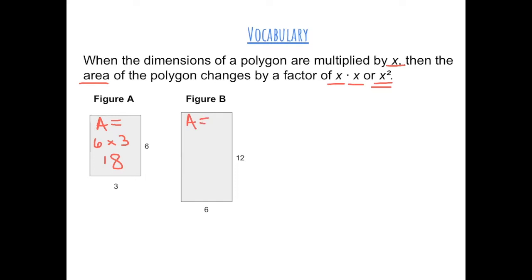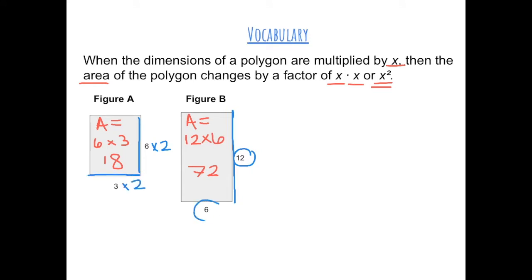In figure B, we have an area of 12 times 6, which gives us an area of 72. The dimensions from figure A to figure B are 2 times greater: 6 was multiplied by 2 to get 12, and 3 was multiplied by 2 to get 6. So because it is 2 times greater, the area from figure A to figure B is 2 squared times greater, and 2 squared is equal to 4 times greater.